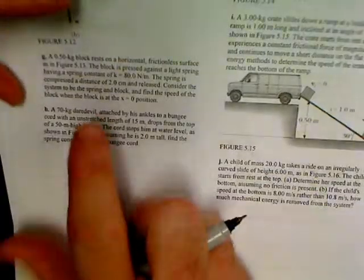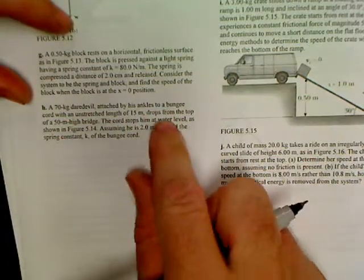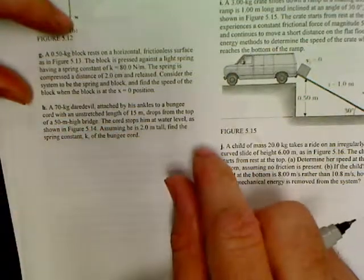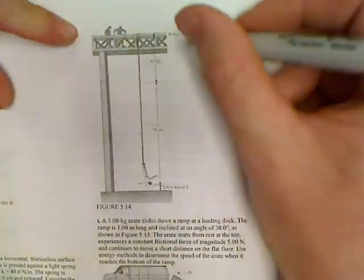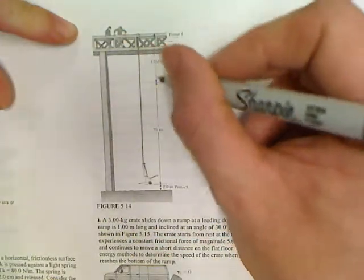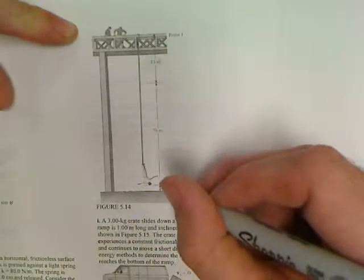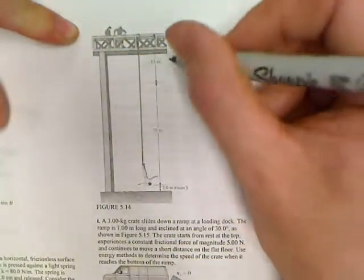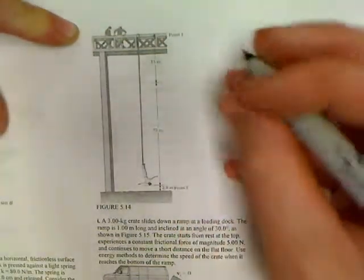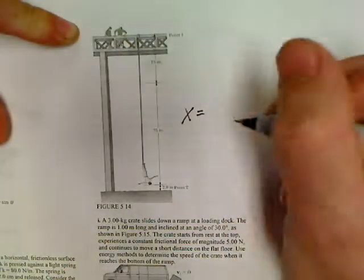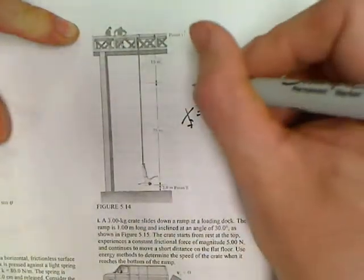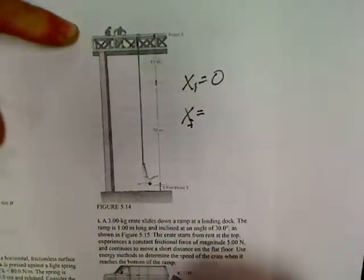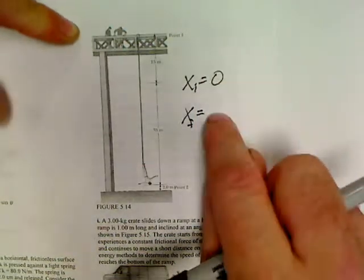Let's now work another one. I'm getting excited, love me some good physics class. Here's H: A daredevil attaches a bungee cord to his ankles. He's going out over a 50 meter high bridge. Here's the picture: the bridge is 50 meters and we've got a 15 meter long bungee cord. He stops two meters above the surface of the water.